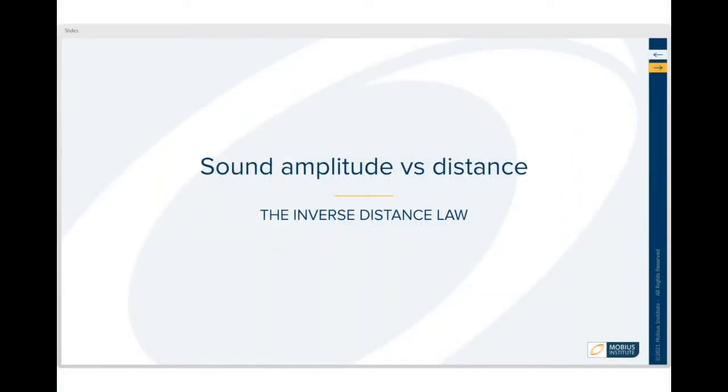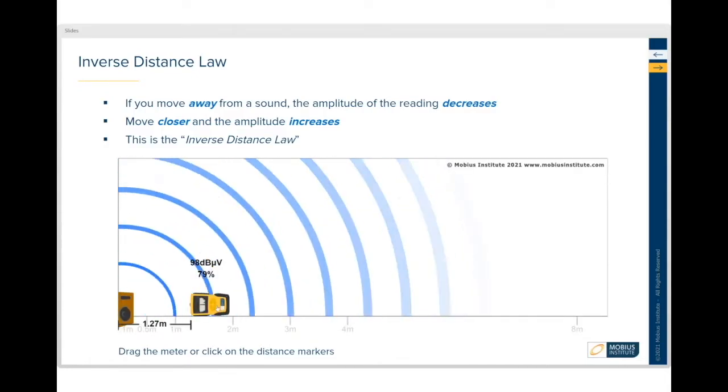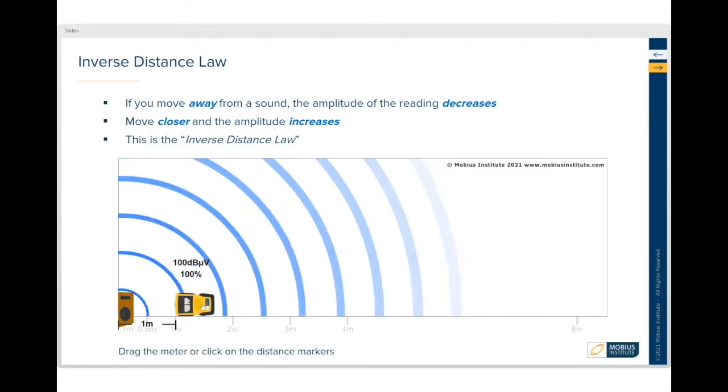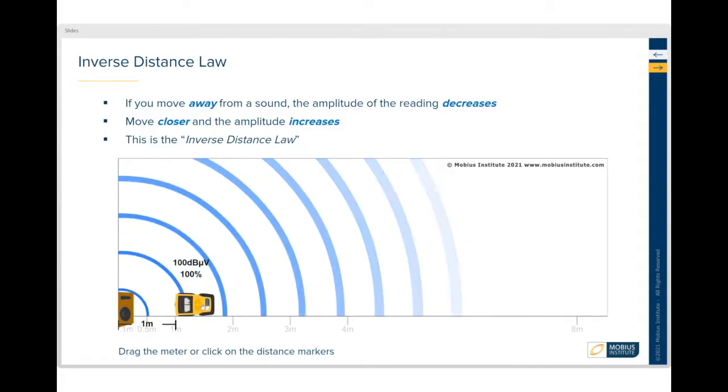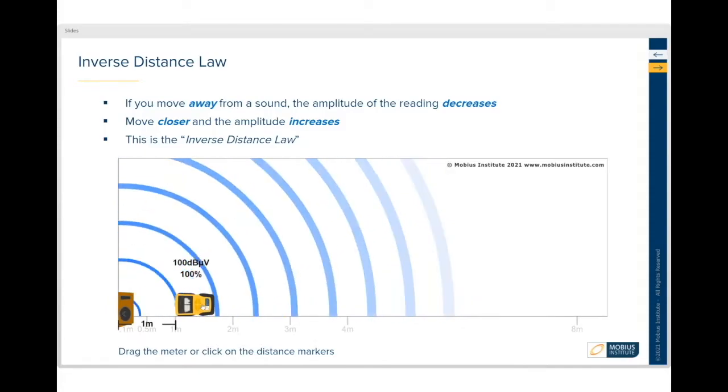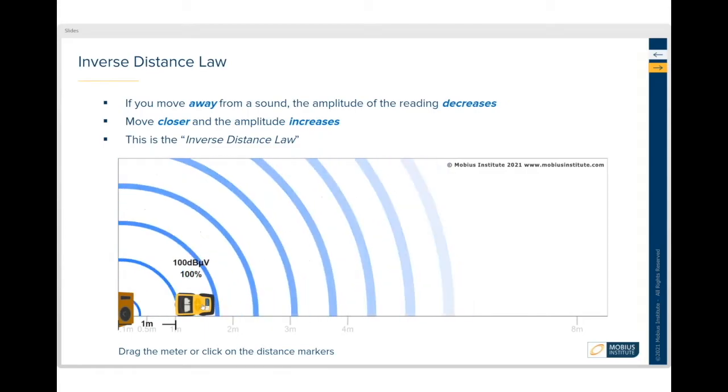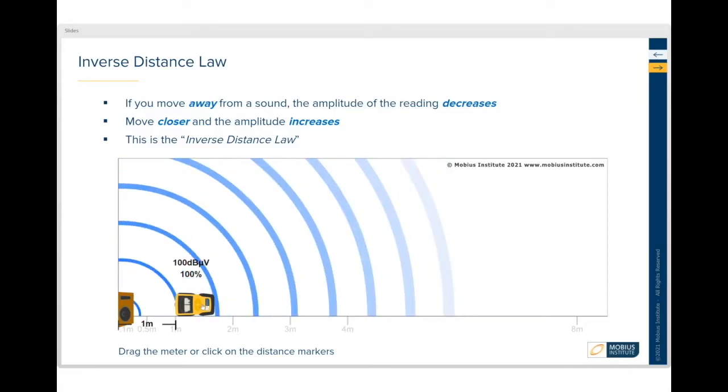The last little bit of theory I want to talk about, which is a very important point from a practical point of view, is what's called the inverse distance rule. That is, the further you are away from the item under test or the item generating the sound, the lower the amplitude will be.